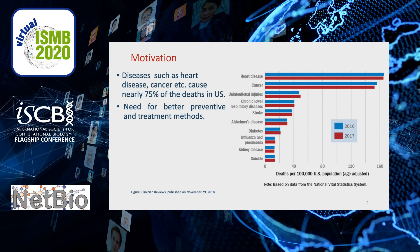Diseases such as heart disease and cancer cause nearly 75% of the deaths in the US. Such complex diseases involve multiple genes and their interactions with environment. Identification of gene-disease relationships enables better understanding of disease mechanisms for better preventive and treatment methods.